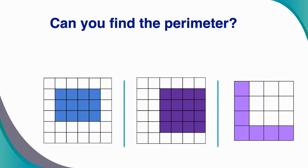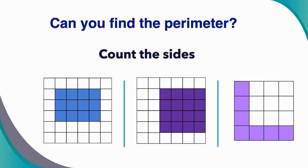Can you find the perimeter when we are given square grids? To find the perimeter of the shape, we count the sides. Let's look at our first diagram. Count with me: one, two, three, four, five, six, seven, eight, nine, ten, eleven, twelve, thirteen — and each one of those sides represents a centimeter, so the perimeter of that shape is 14 centimeters.